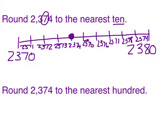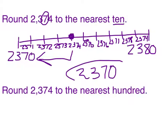That's four spaces away from the smaller ten and six from the larger. It's closer to 2370. When I round 2374 to the nearest ten, I get 2370.